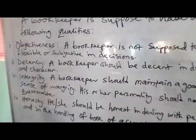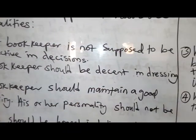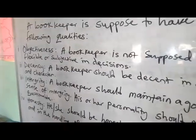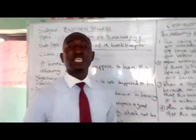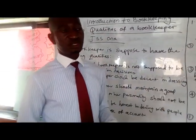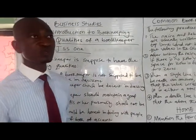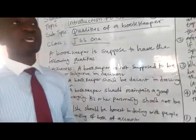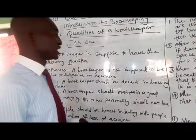Secondly, decency. A bookkeeper should be decent in dressing and character. There is this adage that says the way you dress is the way you will be addressed. If you dress responsibly and decently in a business organization, a lot of people will give you credit and will also respect you for your appearance, because you need to appear decently in order to promote and grow your business.